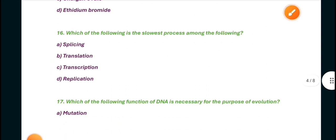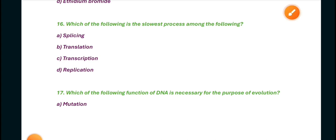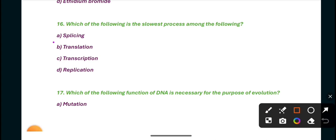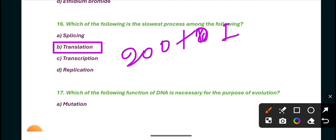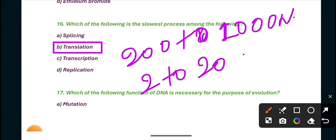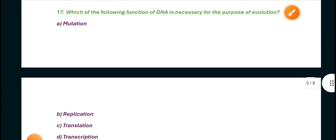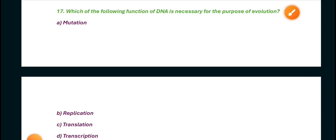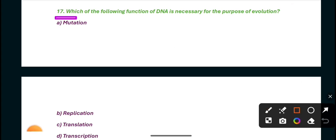Question 16: Which of the following is the slowest process among the following? The answer is translation. The speed of DNA replication is 200 to 1000 nucleotides made per second, and translation is 2 to 20 amino acid formation per second. Next, which of the following functions of DNA is necessary for the purpose of evolution? The answer is mutation. DNA is necessary for the purpose of mutation.